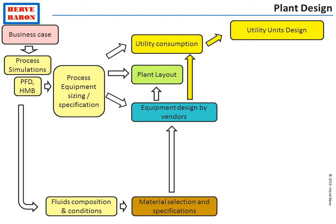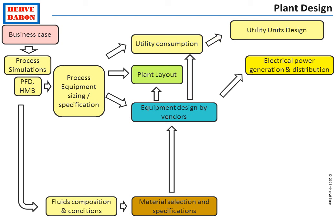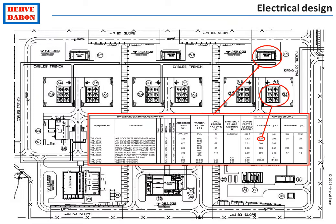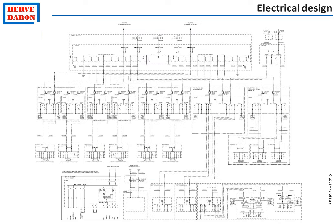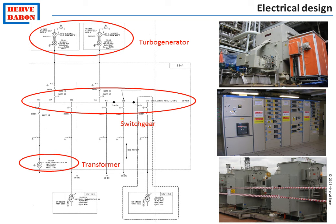Information from equipment vendors is not only required to perform the plant layout, but also to design the utilities. The utilities of the plant have to supply the required amounts of cooling water, fuel gas, steam, and so forth to the equipment. In addition, equipment vendors will advise the power consumption of their equipment, which will allow sizing of the electrical power generation and distribution — including defining the architecture of the electrical distribution as shown on the single line diagram — and sizing all distributed equipment such as transformers, switchgear, and cables.